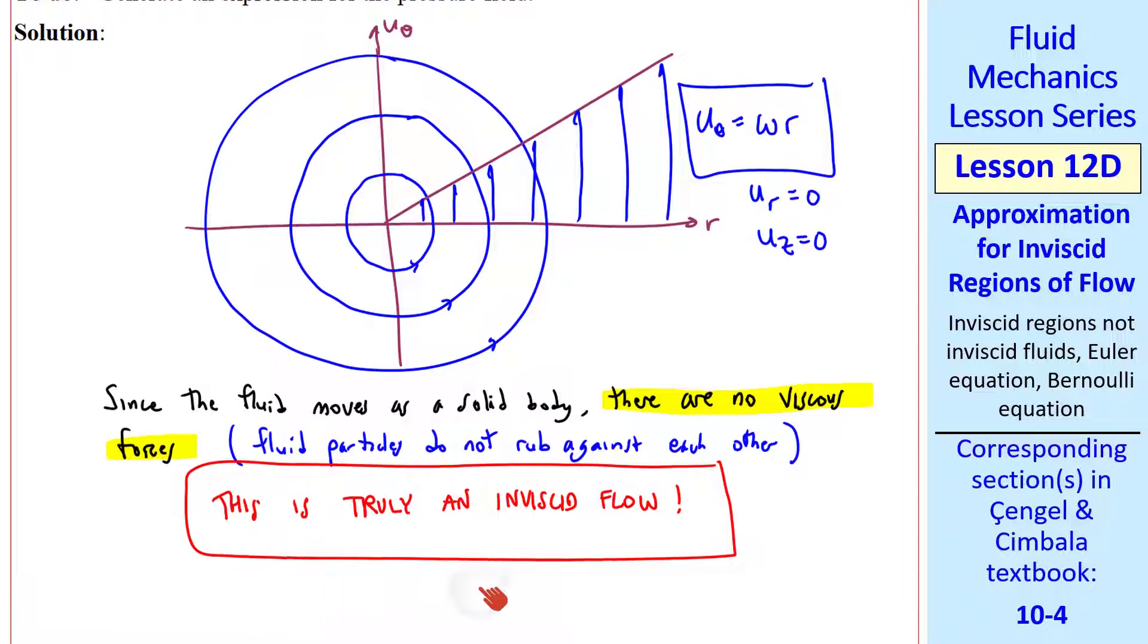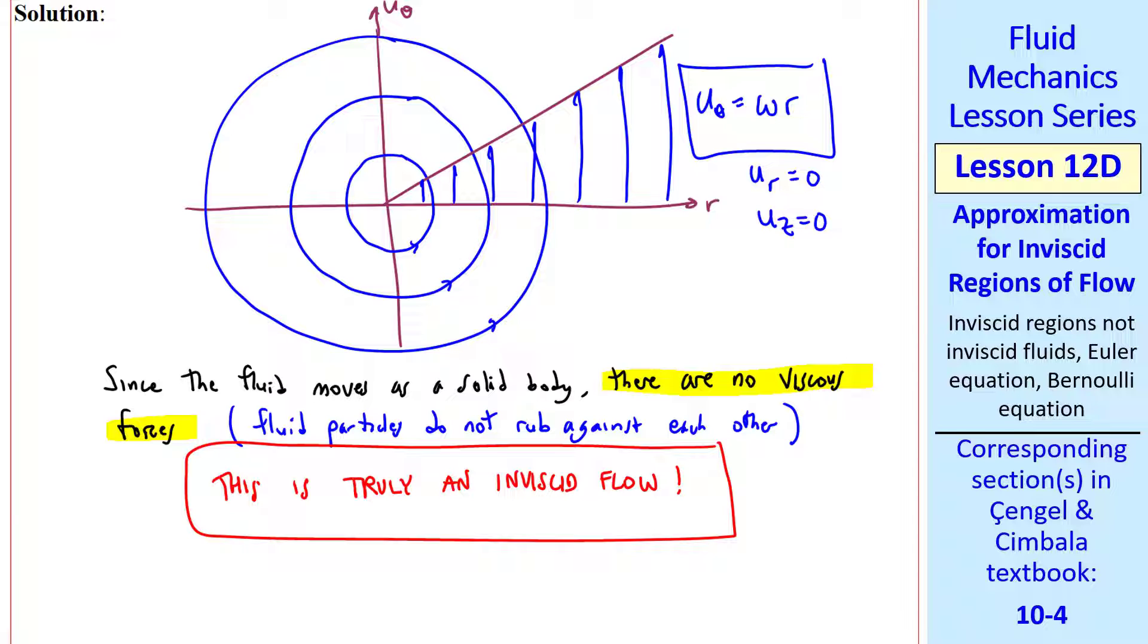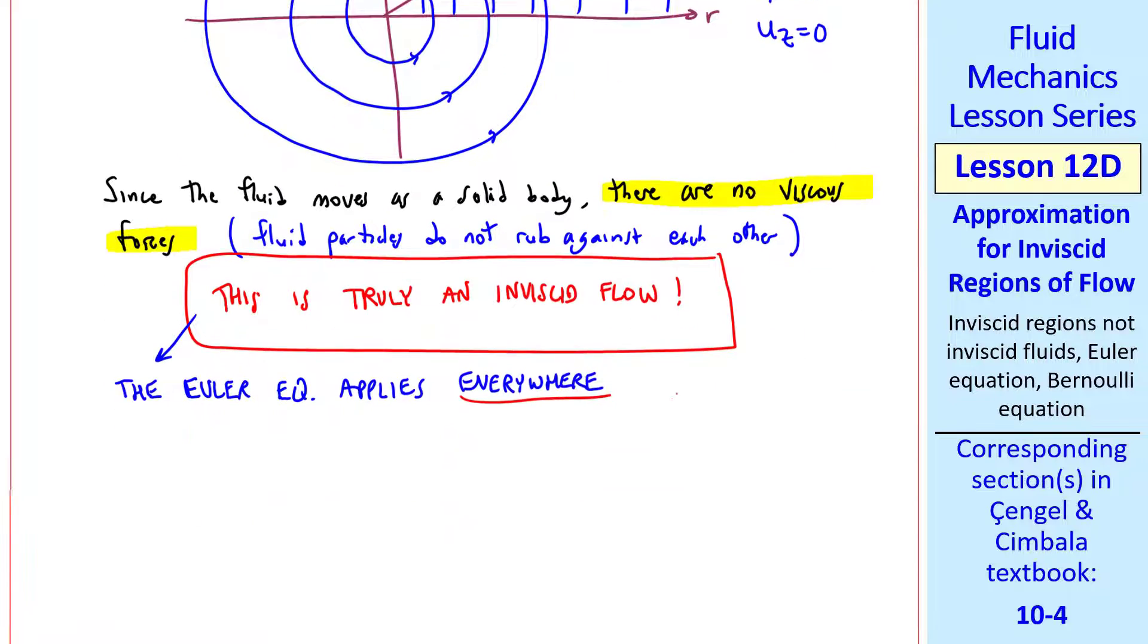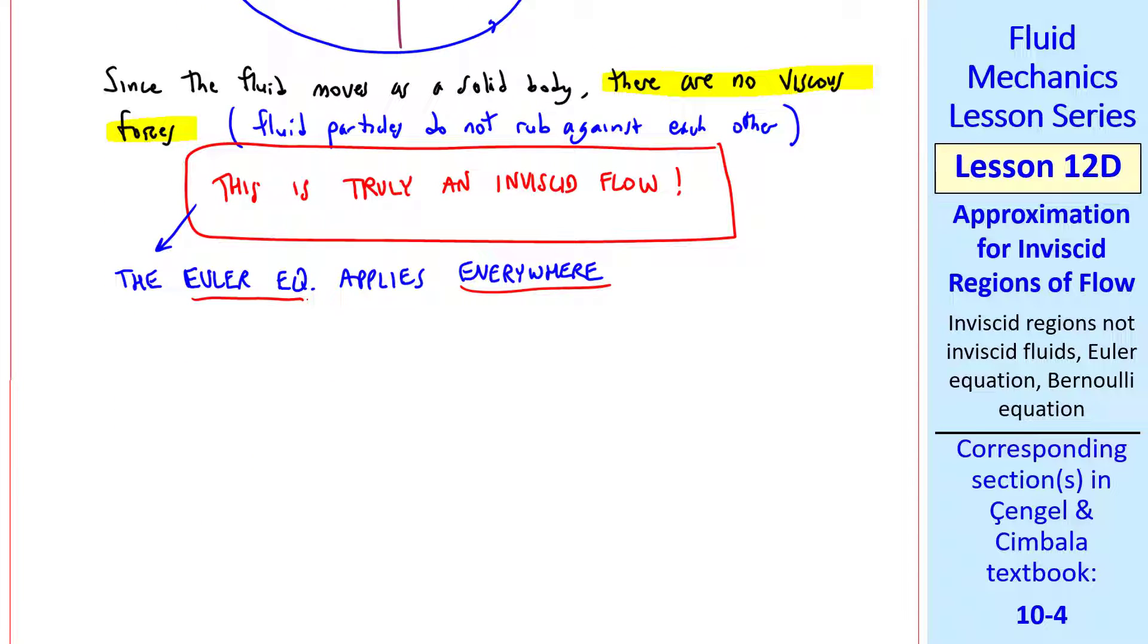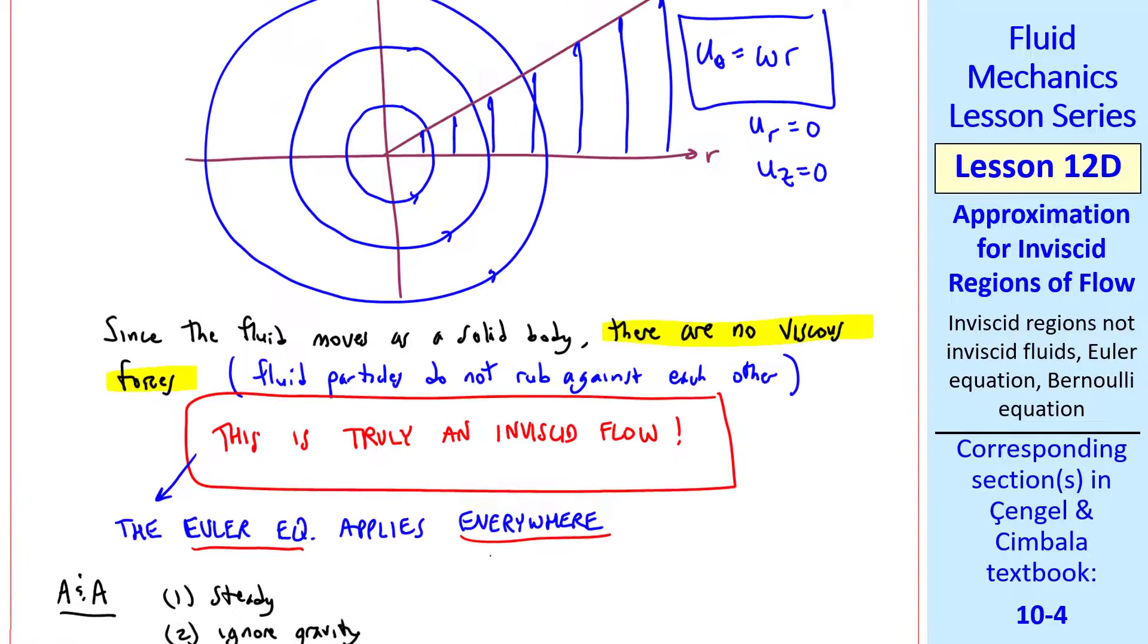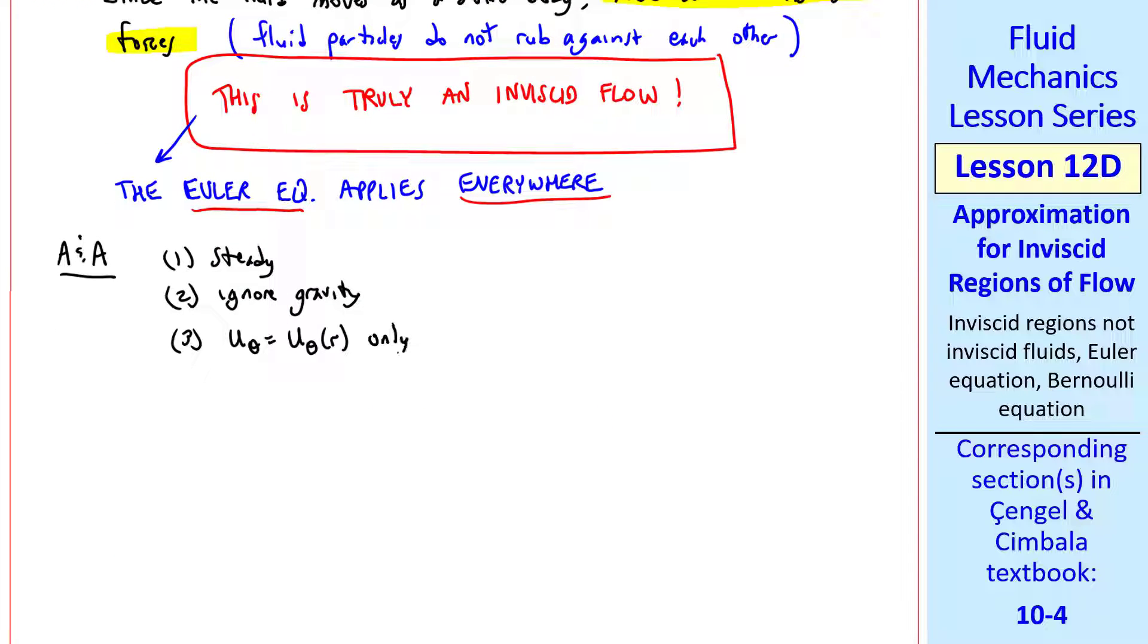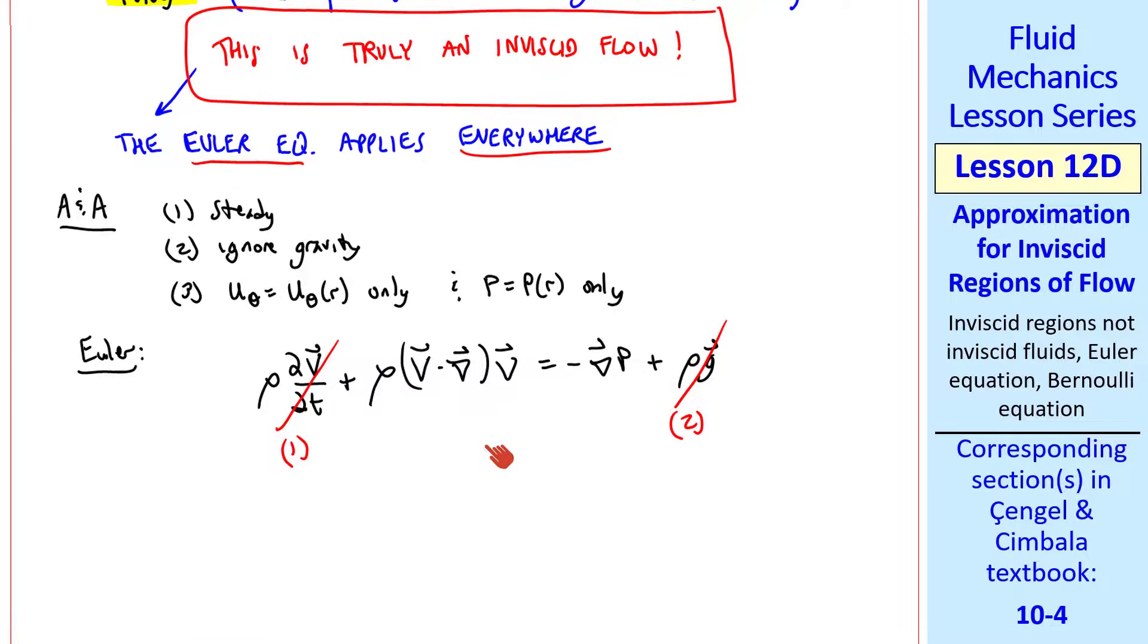Later on, we'll talk about irrotational flows. This is a rotational flow, but it's an inviscid flow. For this flow then, the Euler equation applies everywhere, not just in inviscid regions of flow away from the wall. In fact, there are no walls in this flow. So let's use the Euler equation to solve this problem. I'll list some assumptions and approximations. The flow is steady. We ignore gravity. I note here that gravity could be considered in the z direction, but that won't affect our solution for p as a function of r. Our third assumption or approximation is that u theta is a function of r only, and p as a function of r only. Here's our Euler equation. This flow is steady, and we're ignoring gravity because of 1 and 2, respectively. And now we can solve this equation.